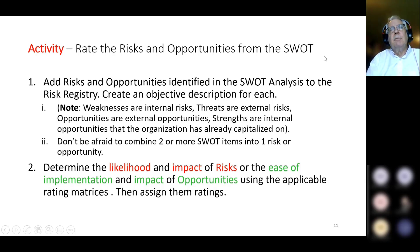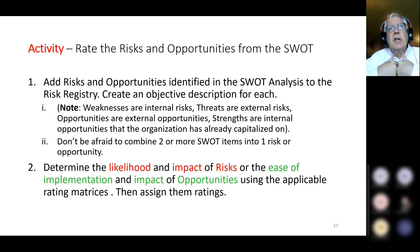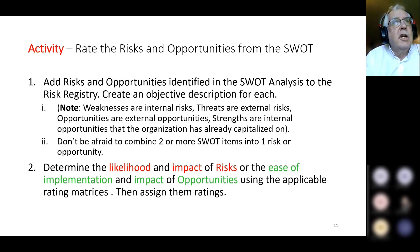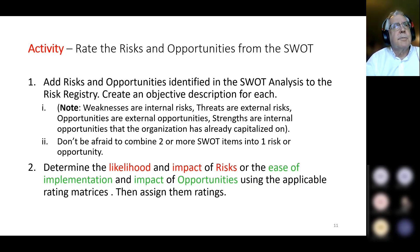You rate the risks and opportunities from the SWOT — remember, the SWOT is a brainstorming activity producing a whole bunch of suggestions for objectives, things to take care of, or take advantage of. You need to bring it down to a manageable lot, and that's why you rate them. You add the risks and opportunities identified in the SWOT analysis to the risk registry. A risk registry is essentially a database — it notes the risk or opportunity, what the rating was, the description, and whether you need to do something about it based on the rating.